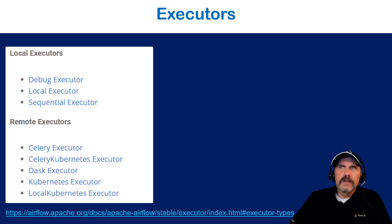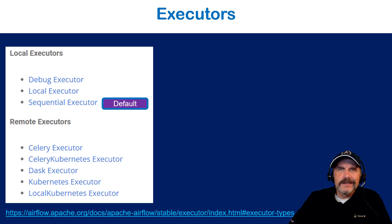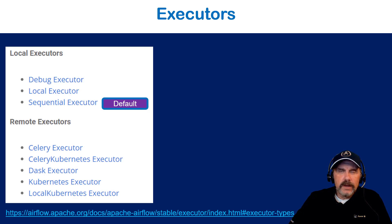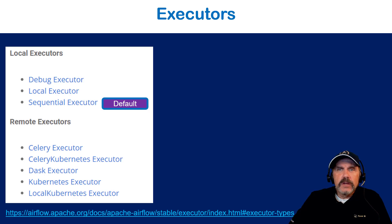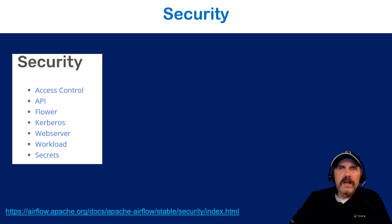You start with the sequential executor by default — that's kind of the hello world environment. You can upgrade to the local executor, which lets you work on a local machine without scaling out. That may actually work in many cases if you don't have a heavy workload. Then you have remote executors for better scale and more complexity, like using the Celery executor, Kubernetes, or Dask. There are also a lot of security options — check those out online.